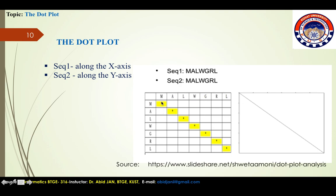Now, as these two sequences are identical, we have dots in this pattern, and if we join these dots we will get a continuous diagonal line.